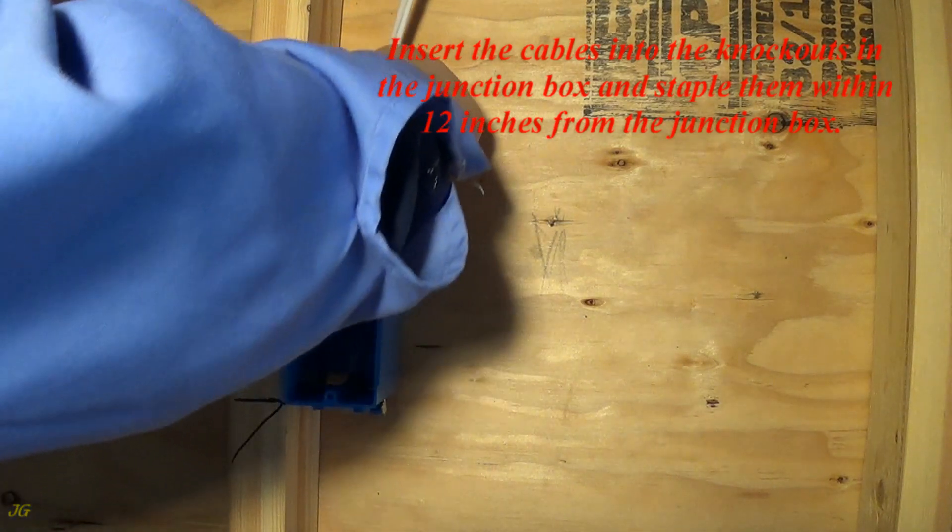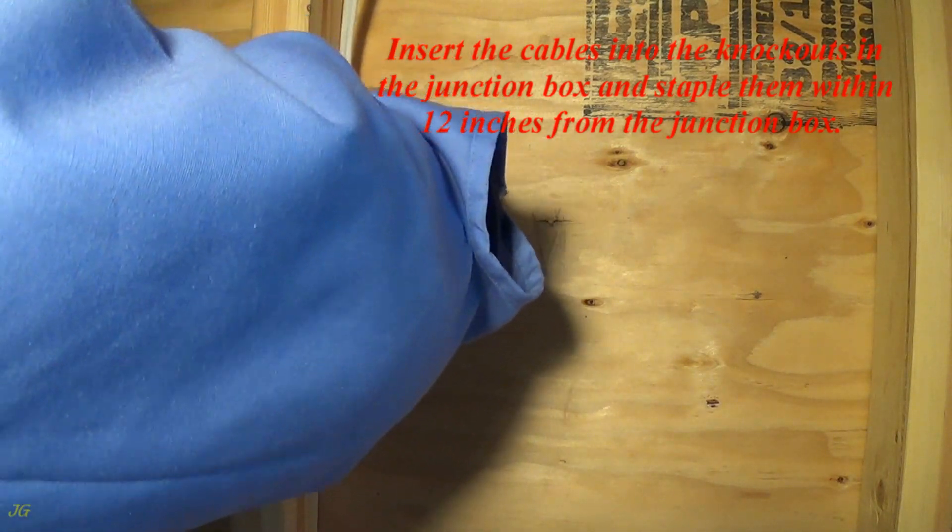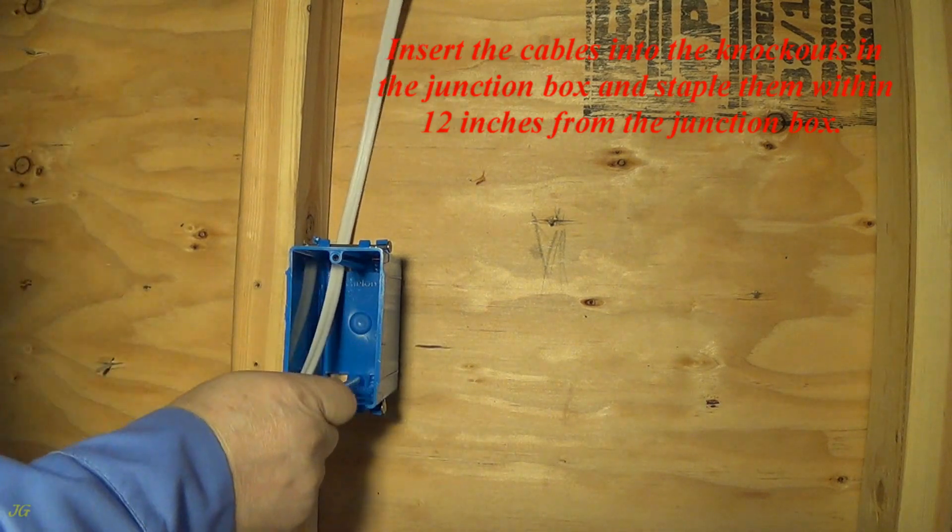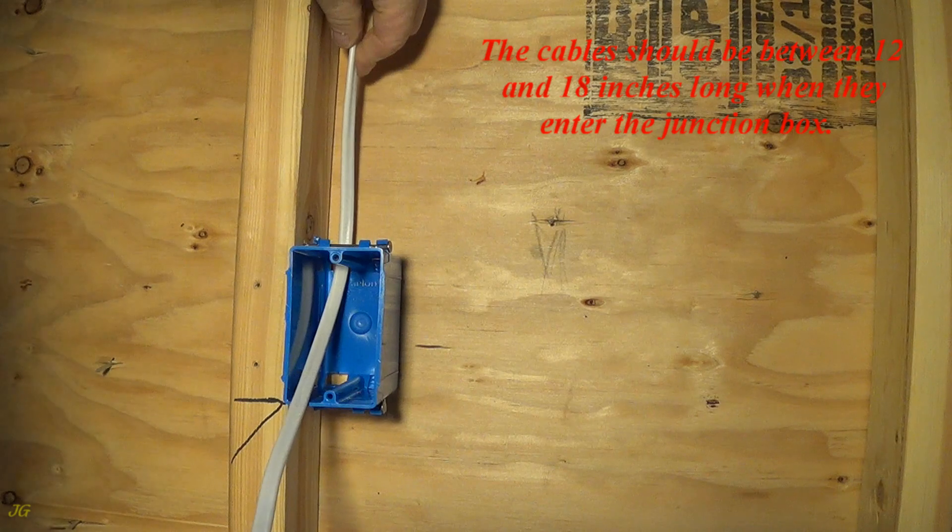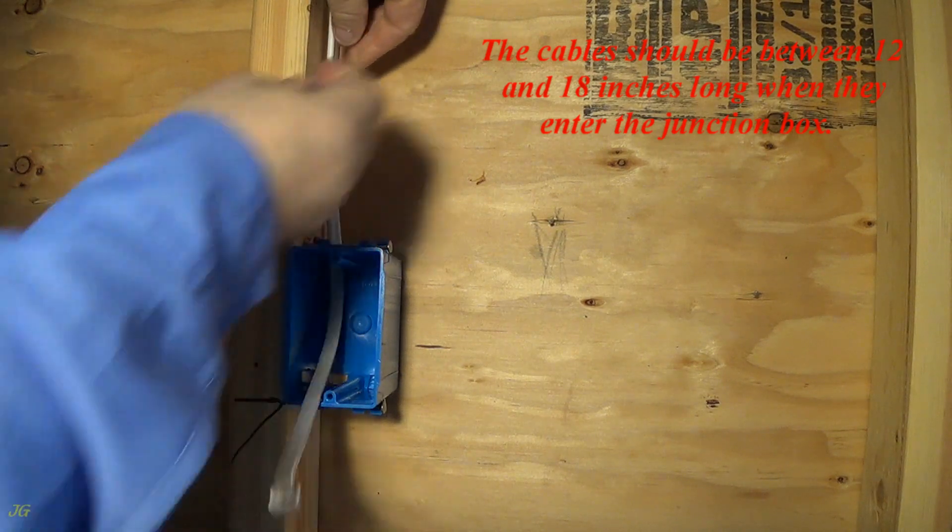Insert the cables into the knockouts in the junction box and staple them within 12 inches from the junction box. The cables should be between 12 and 18 inches long when they enter the junction box.